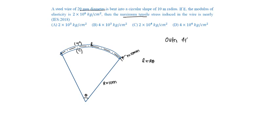Outer fiber length will be equal to radius now will be R plus small r. So R plus small r into theta will be the arc length.